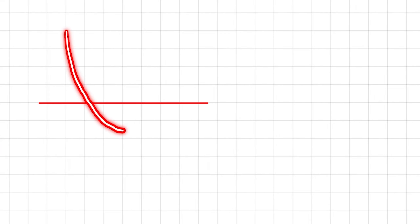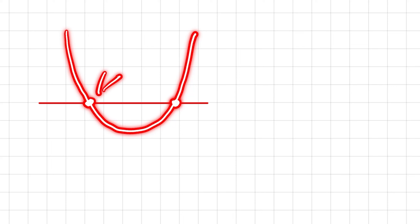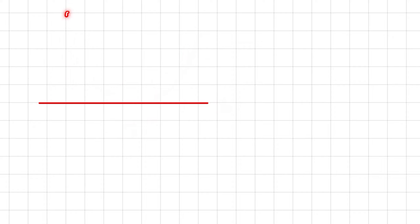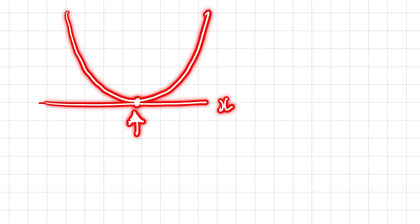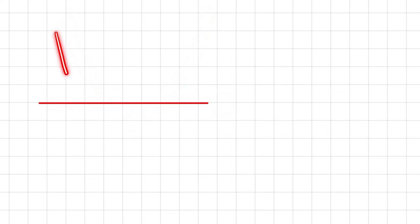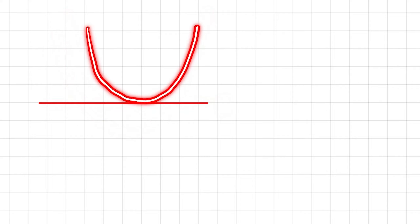First, we can have a parabola with two roots. These roots can be positive or negative, but there will always be two different values. We can also say that these roots are real and exist on a number line. Secondly, we can have a parabola with only one x-intercept, where a root touches the x-axis. Notice that the root is still real even though it's only touching at one position.